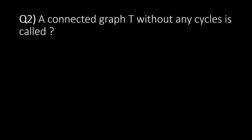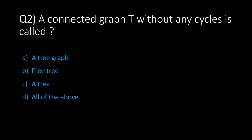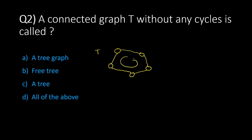The second question: a connected graph T without any cycle is called what? The options are option A: a tree graph, option B: free tree, option C: a tree, and option D: all of the above. A graph is said to be connected if all nodes are connected. If a graph is connected and forms a loop or cycle, that is a cycle graph.